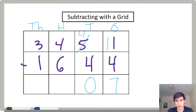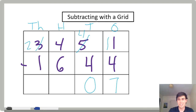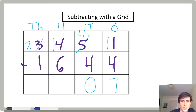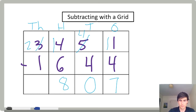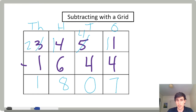I'm going to go to the thousands. I'm going to take one thousand and turn it into 10 hundreds, put that together with my four hundreds, and now I have 14 hundreds. 14 hundreds minus six hundreds gives me eight hundreds. For thousands: two thousands minus one thousand gives me one thousand. My answer is one thousand eight hundred seven. So we can subtract with the grid using whole numbers.